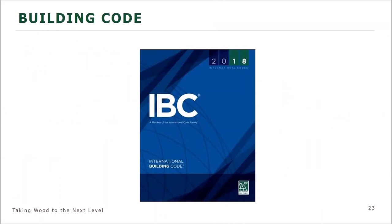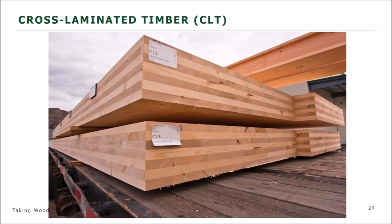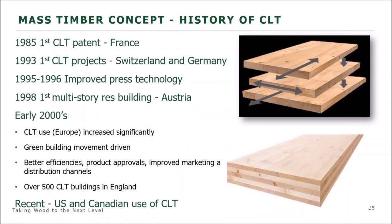The baseline of this presentation is the 2018 IBC. Cross-laminated timber is sometimes nicknamed 'jumbo plywood.' The first patent for cross-laminated timber occurred in 1985 in France, then projects were built in Switzerland and Germany in 1993. There were improvements to press technology, and as early as 2000 there was an increase in CLT use in mid-rise and low-rise buildings to support the green building movement because of the carbon-storing capabilities of mass timber construction.